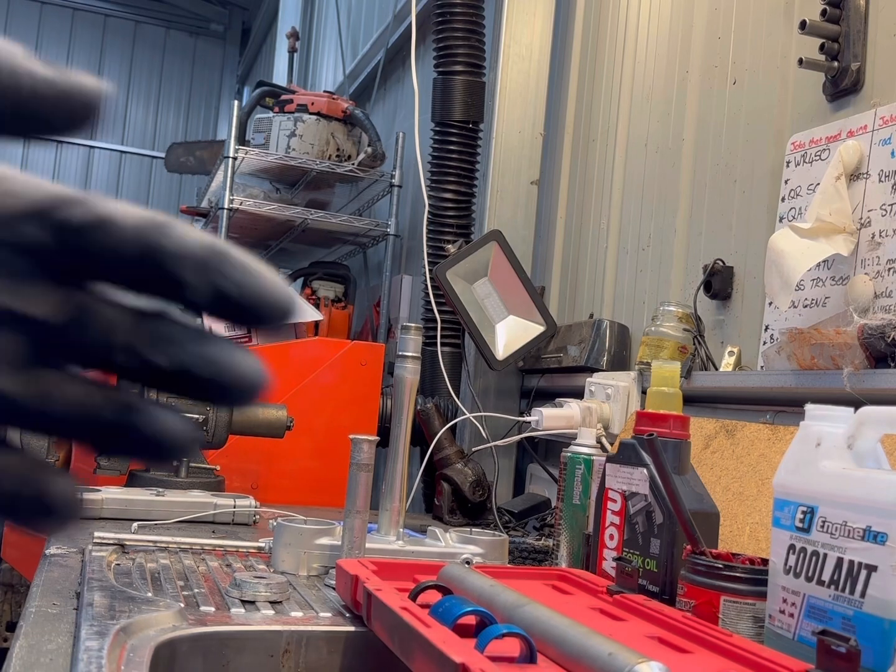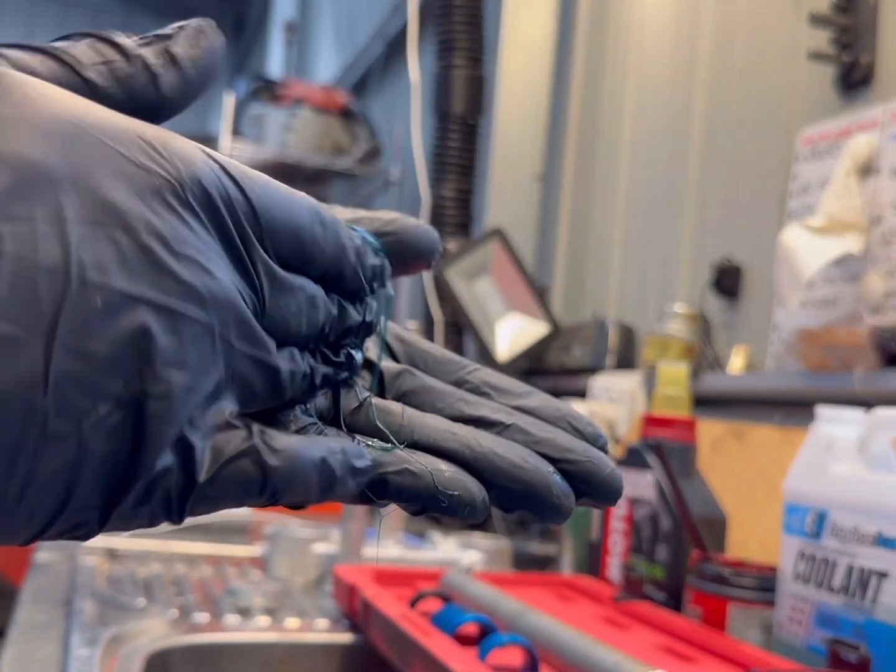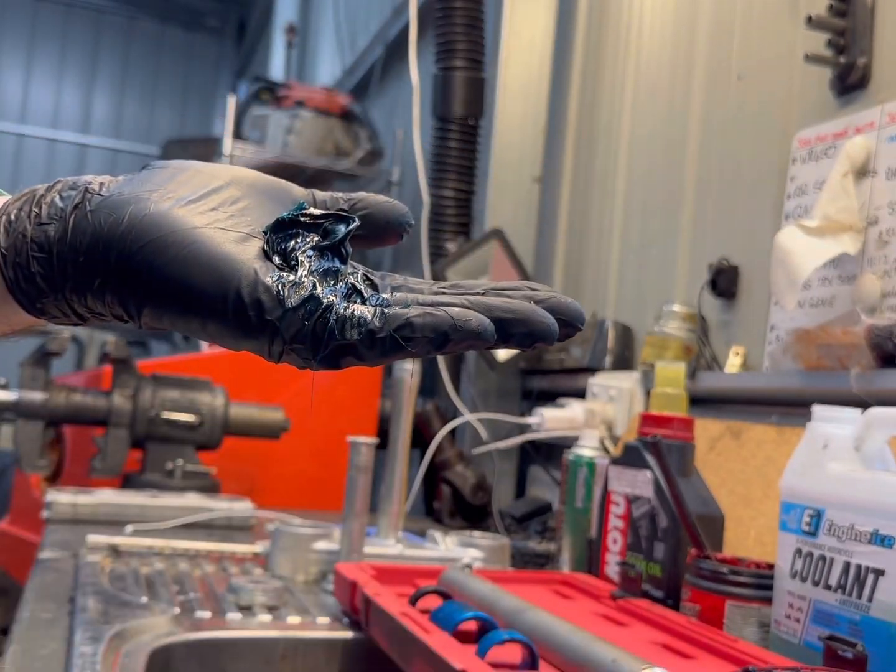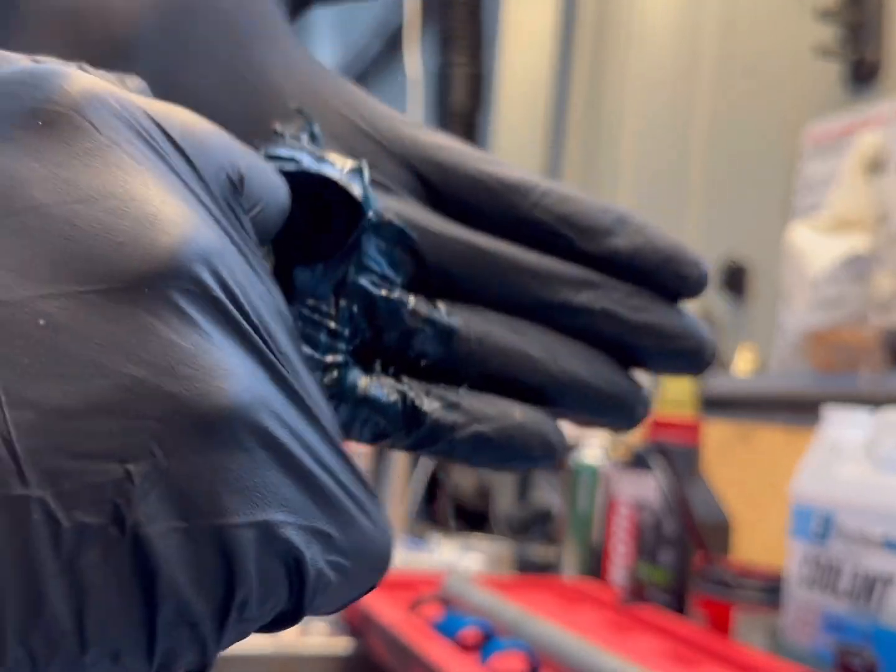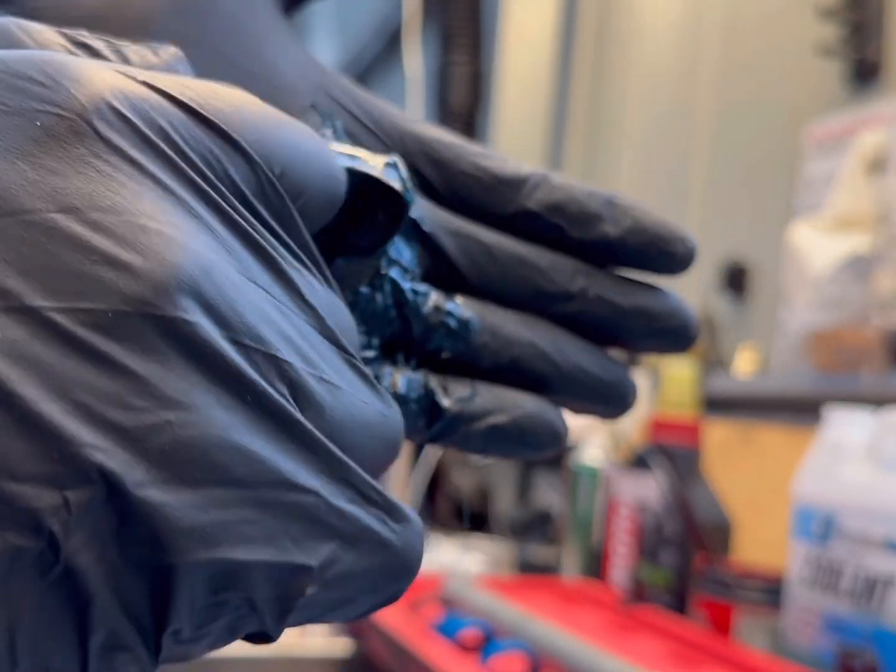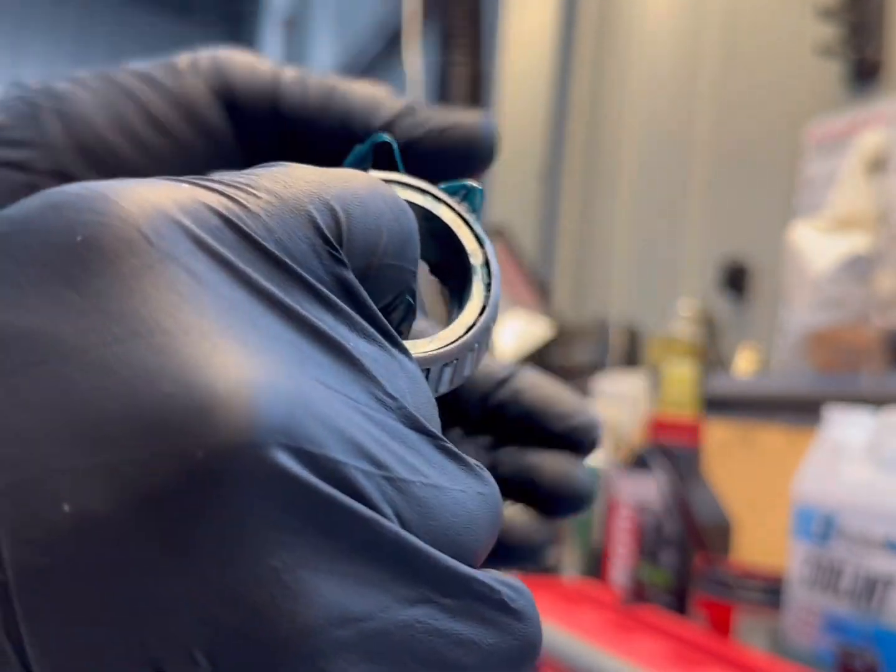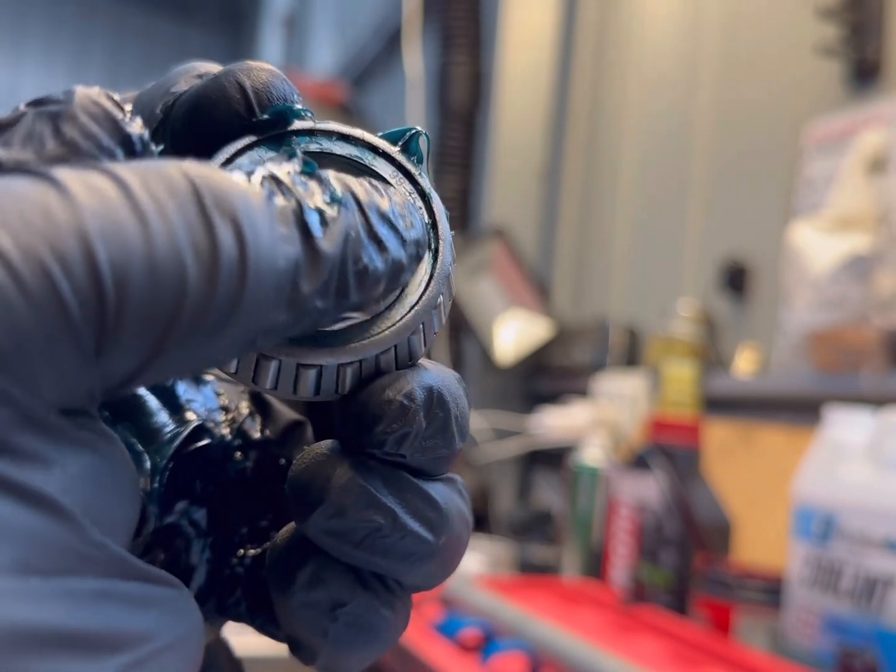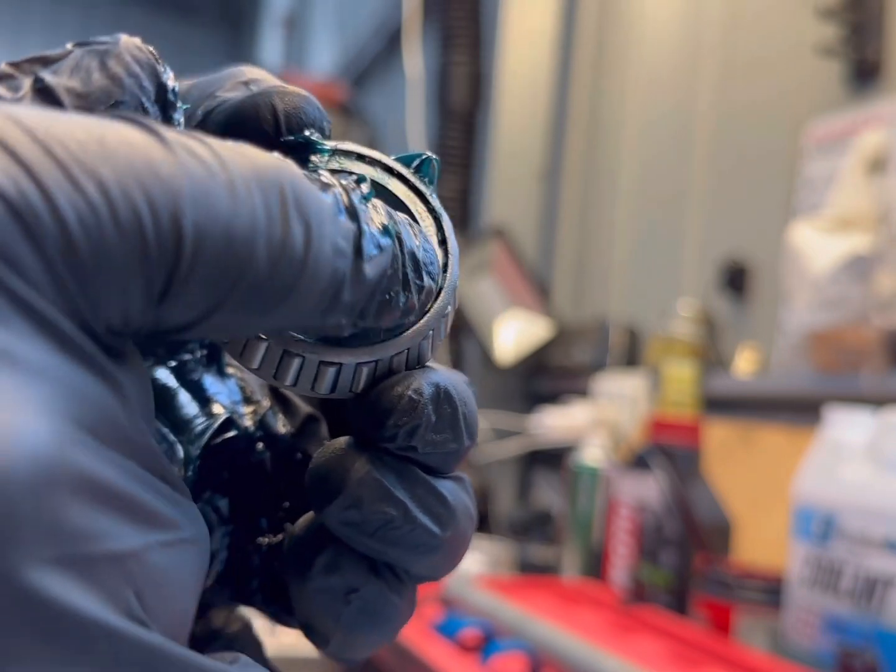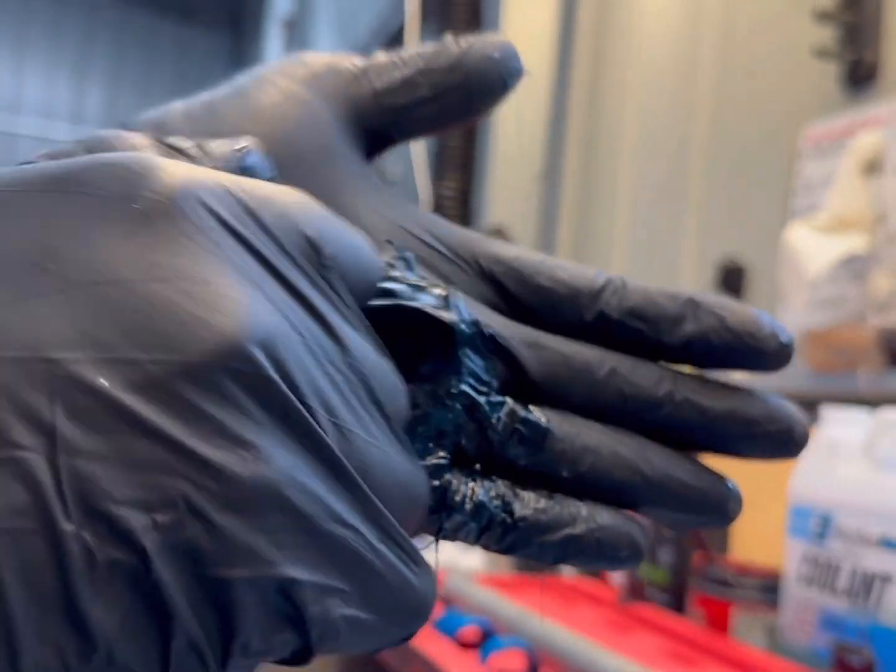Next up, we're going to pack these bearings. I'm using some heavy duty bearing grease. All I do is roll the bearing into my palm until it pushes out through the bearing. You know the bearing has enough grease in it when it comes out through that cage there. We'll just do that right the way around.